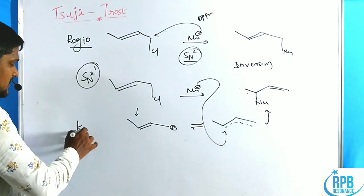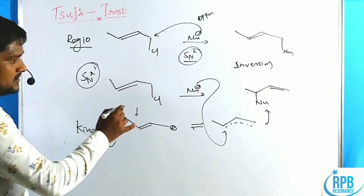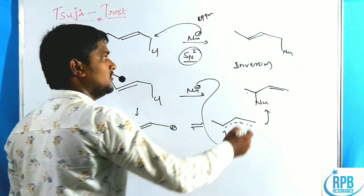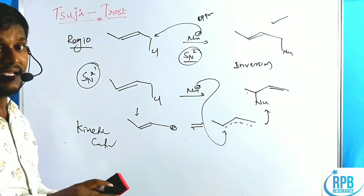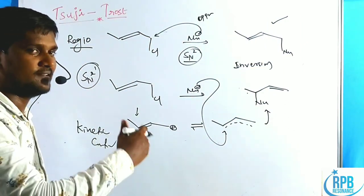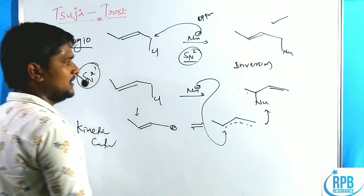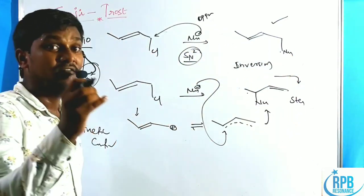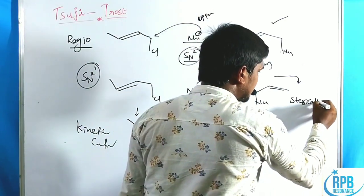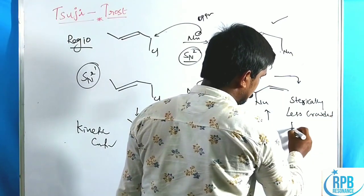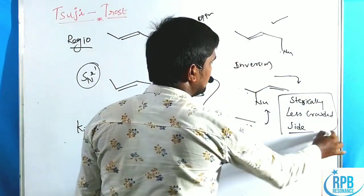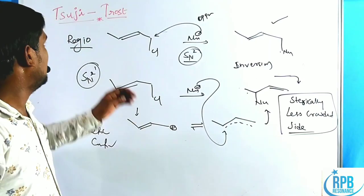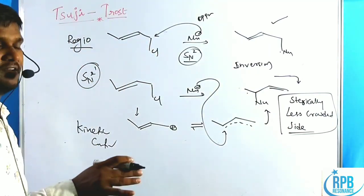In the Suji-Trost reaction, many nucleophiles follow the SN2 mechanism due to retention of stereochemistry. Regioselectivity also depends on steric factors: nucleophilic attack favors the sterically less crowded side. Between SN2 and SN2', the Suji-Trost reaction favors attack at the sterically less crowded position.